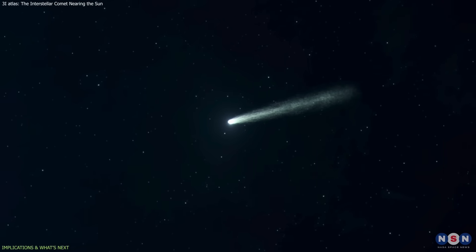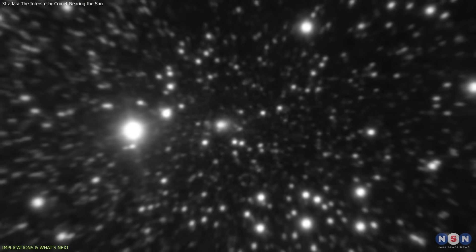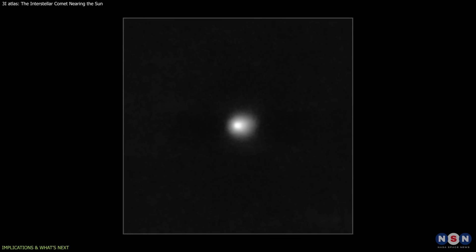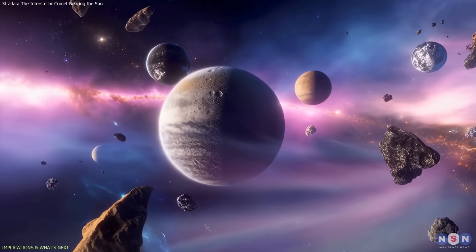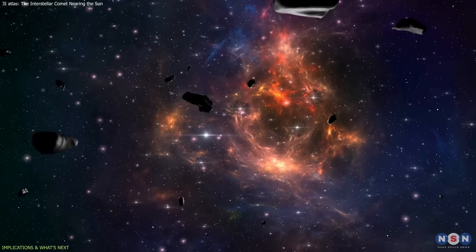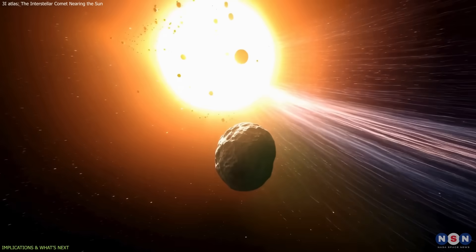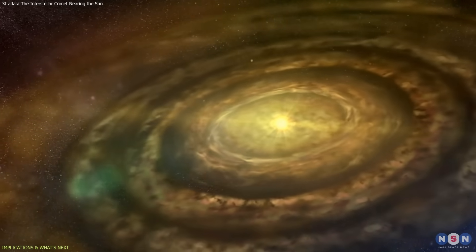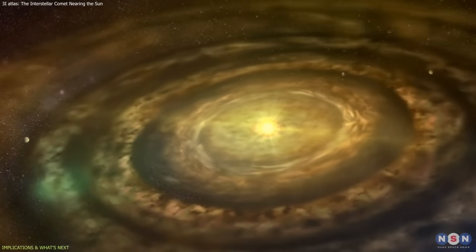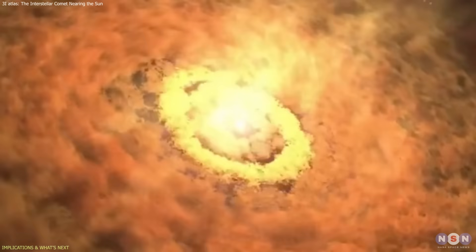The implications go far beyond one object. 3i Atlas helps scientists refine models of interstellar debris exchange, showing how material from distant star systems can travel across the galaxy and enter ours. Understanding these objects provides clues to how planetary systems form, evolve, and interact over cosmic timescales.